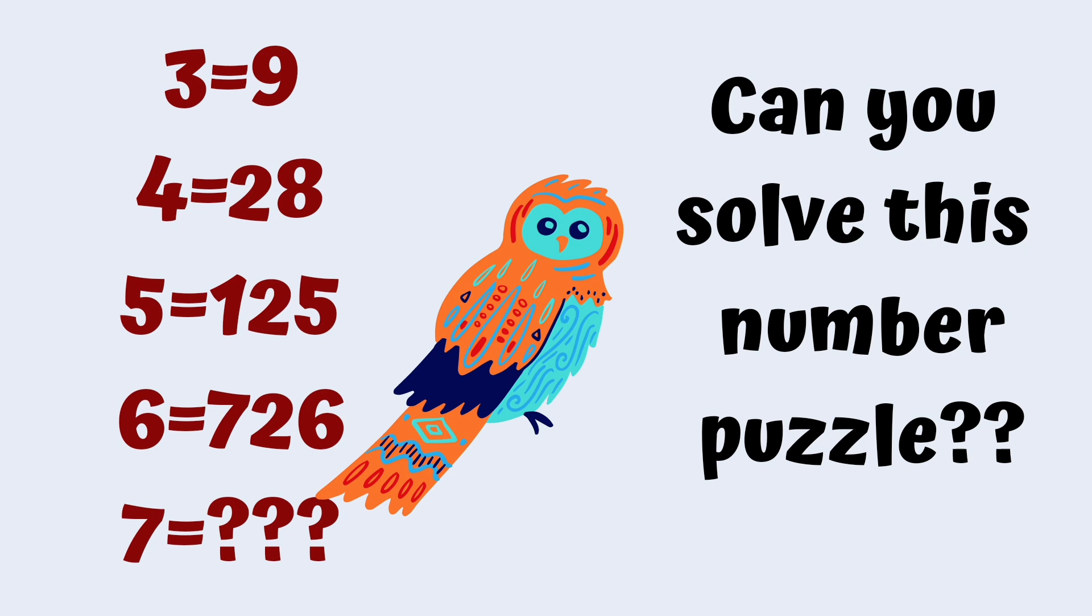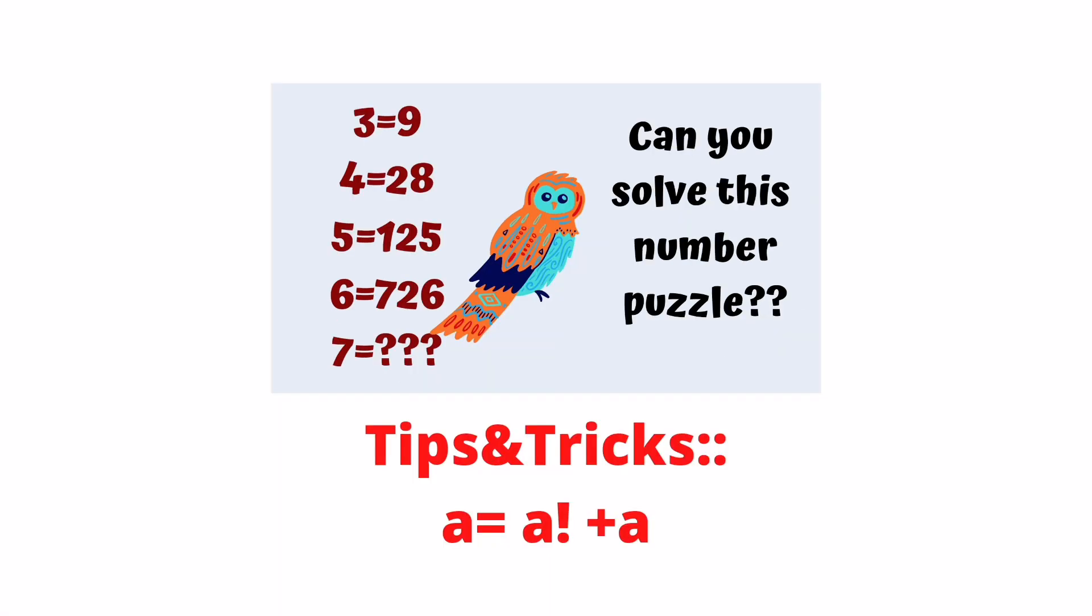First of all, let's see the tips and tricks. This trick is: a equals a factorial plus a. Friends, all the rows satisfy this.